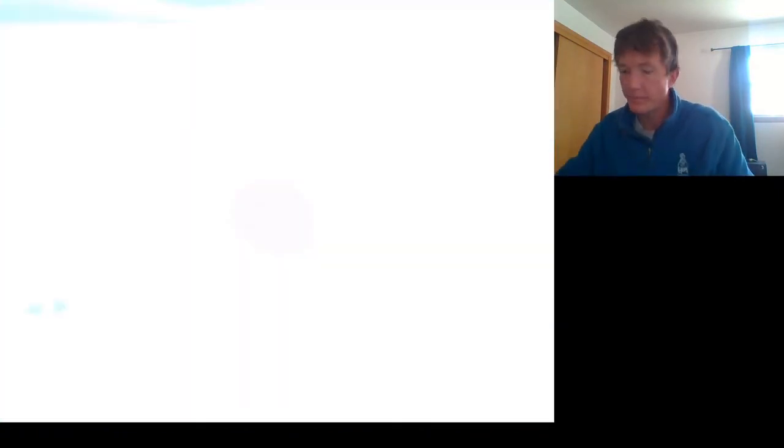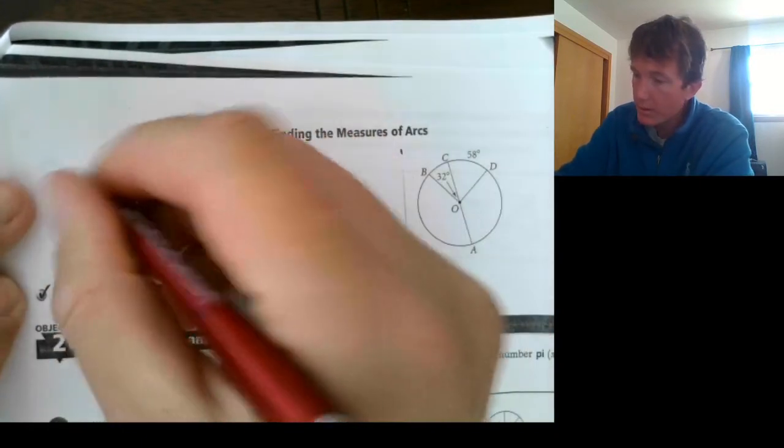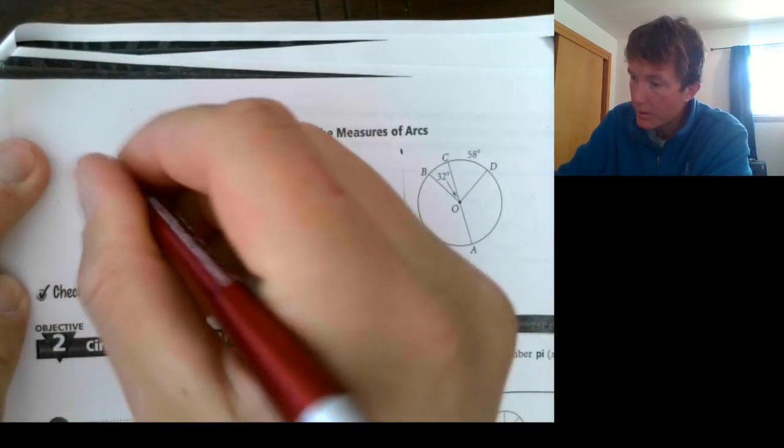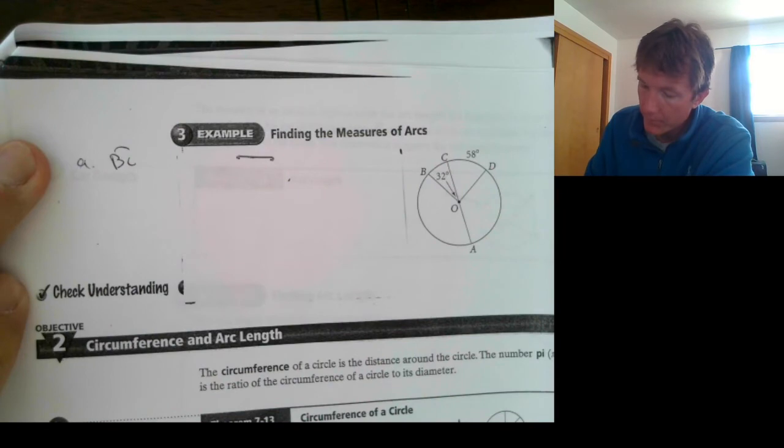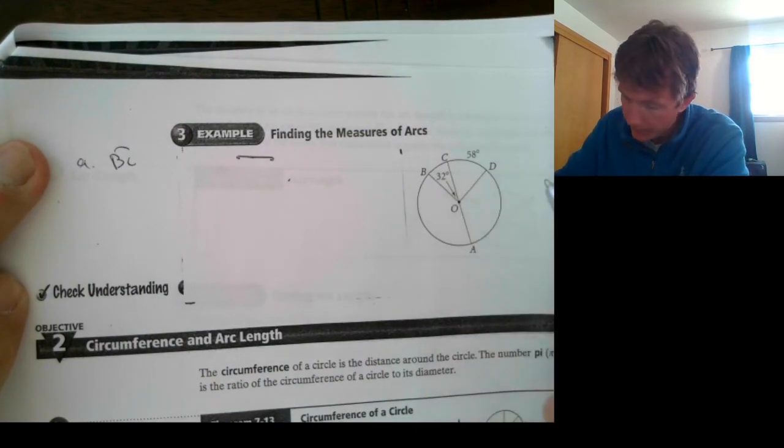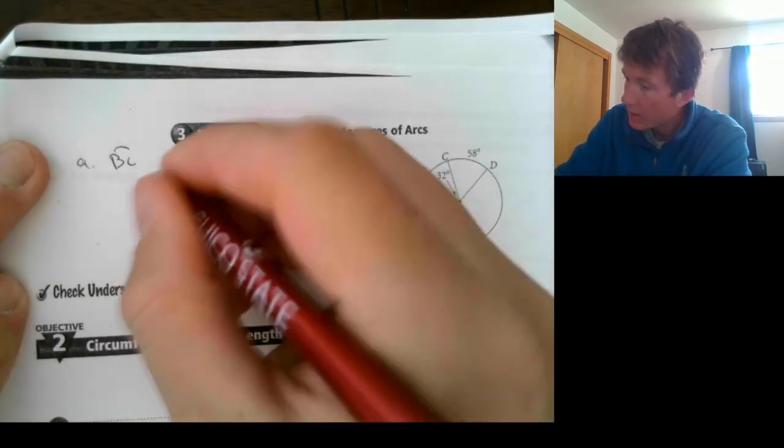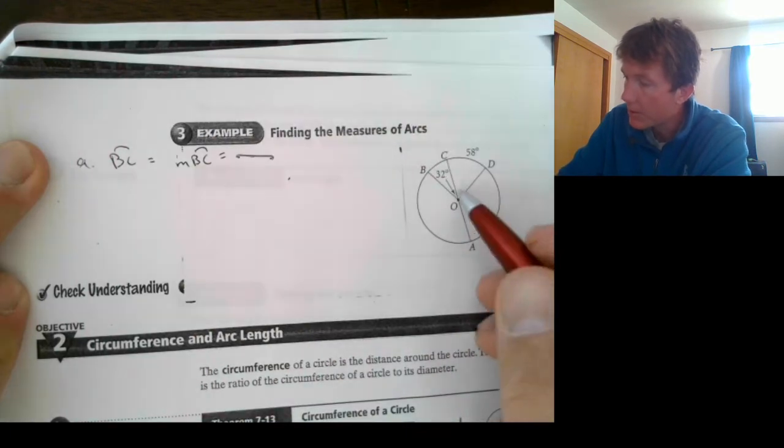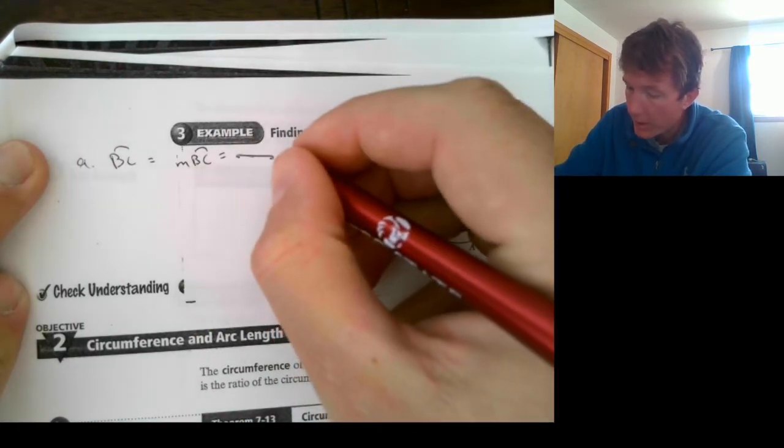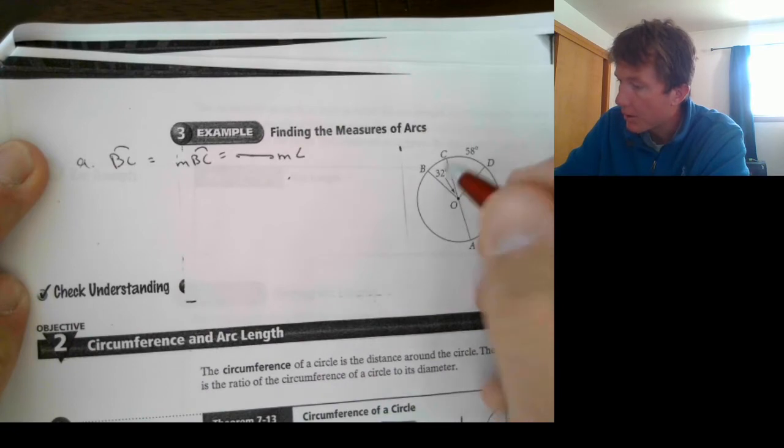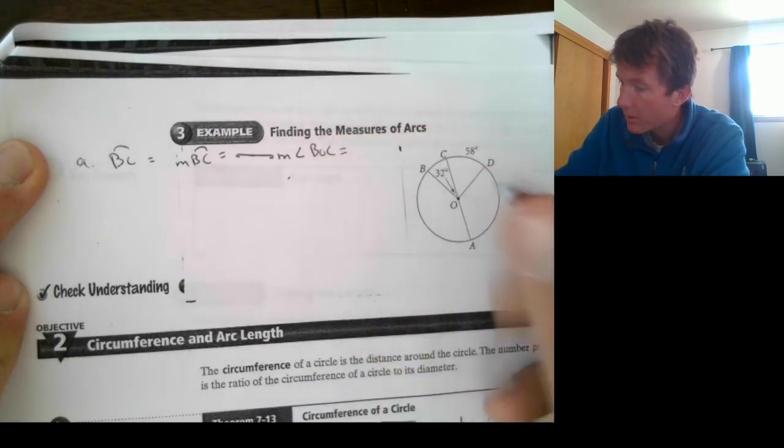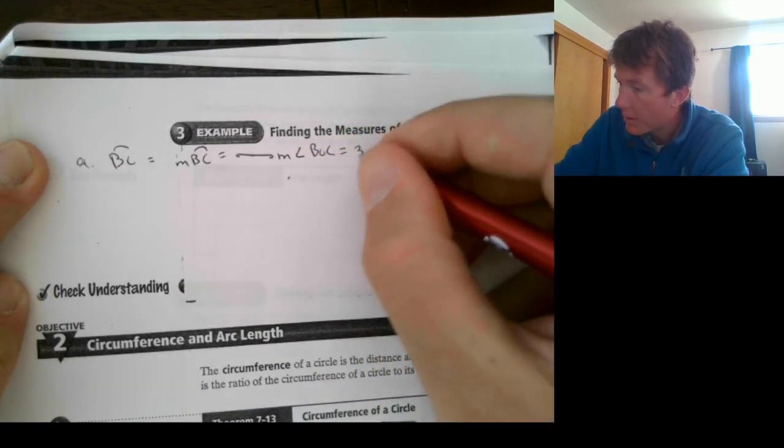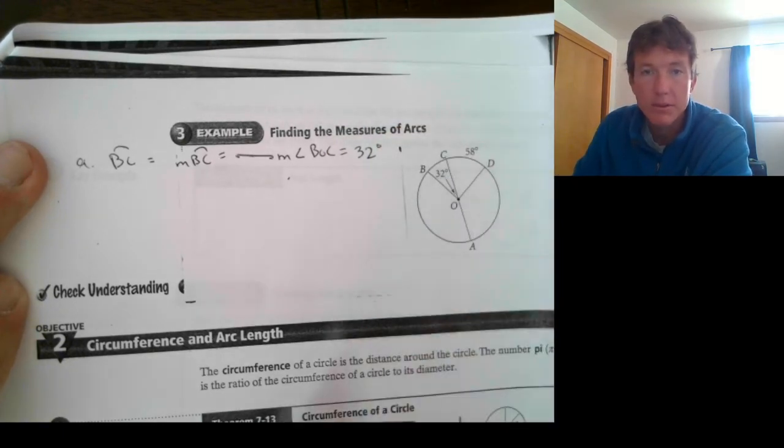Let's go to the page. We're going to find the measure of arcs. We want to find the measure of each arc. So, let's do arc BC. So, the measure of arc BC is equal to the central angle formed by BOC. And we can see that it's 32 degrees. So, the arc BC has a measure of 32 degrees.